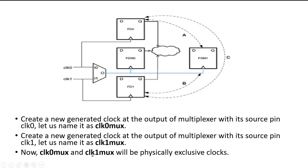Now you can assume that there are two clocks — clock zero mux and clock one mux — at the output of the multiplexer. These two clocks are physically exclusive clocks, because either clock zero mux or clock one mux exists at any point in time; they cannot coexist. So I am declaring clock zero mux and clock one mux as physically exclusive clocks. This gives relaxation to the placement-and-routing tool and the timing analyzer tool, so compile time and placement-and-routing time will be reduced, and the tool can handle timing closure of the overall design more easily. It is a timing exception, basically.